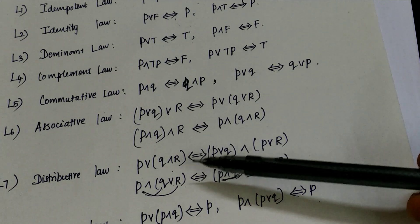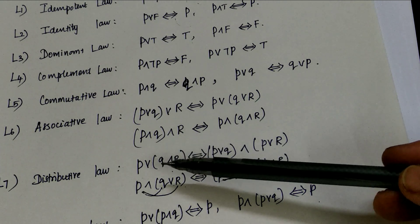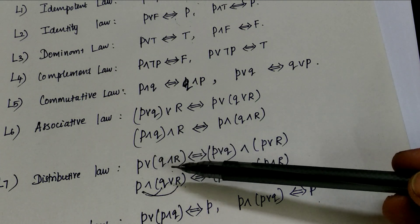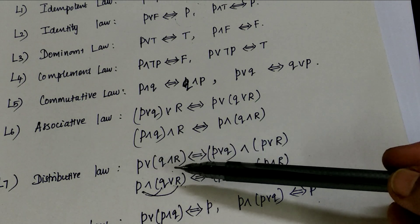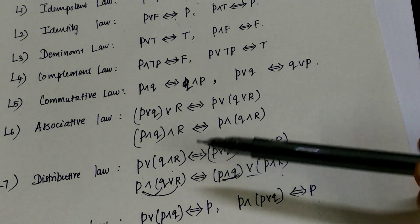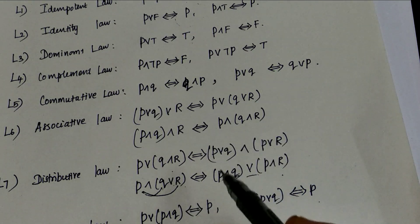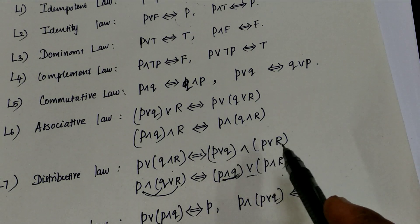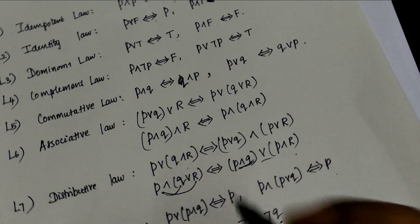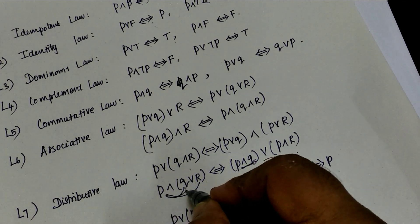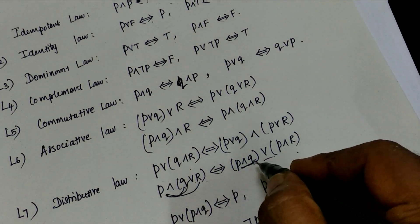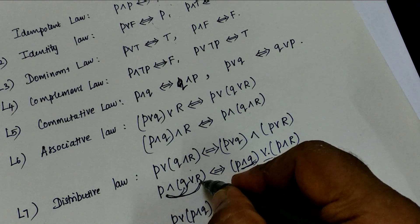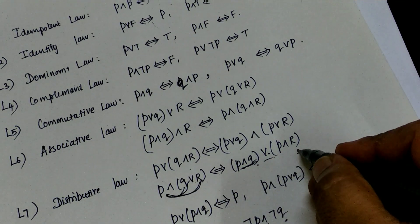Distributive law: the basic concept behind distributive law is multiplication. P or (Q and R) equals (P or Q) and (P or R), and P and (Q or R) equals (P and Q) or (P and R).